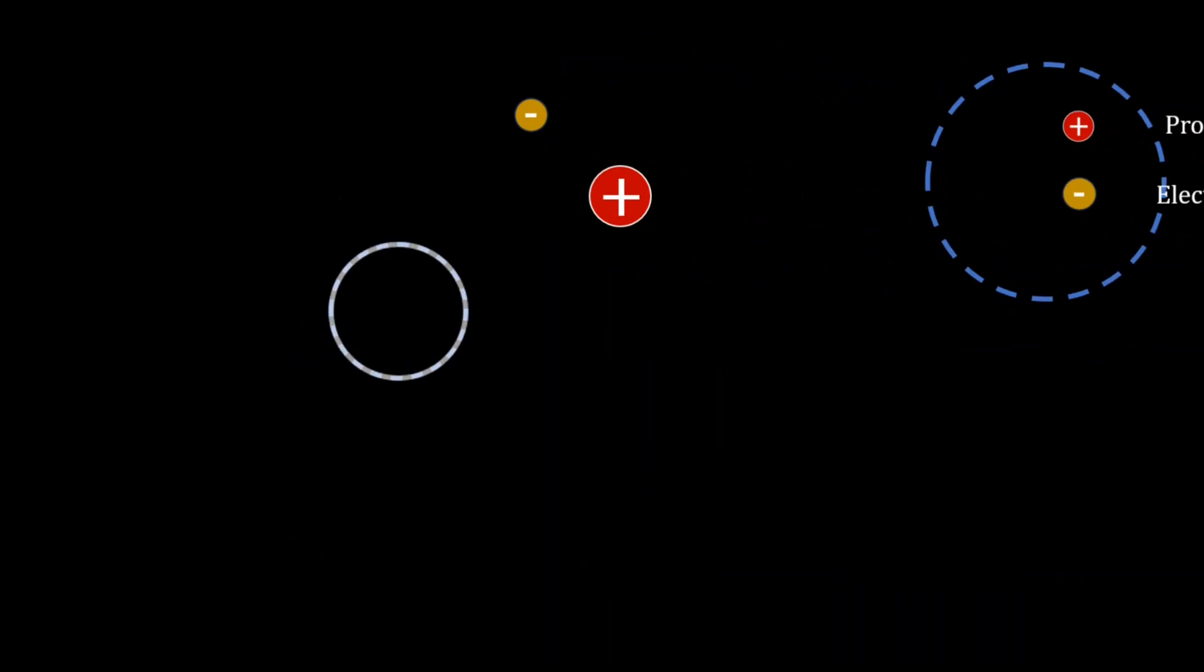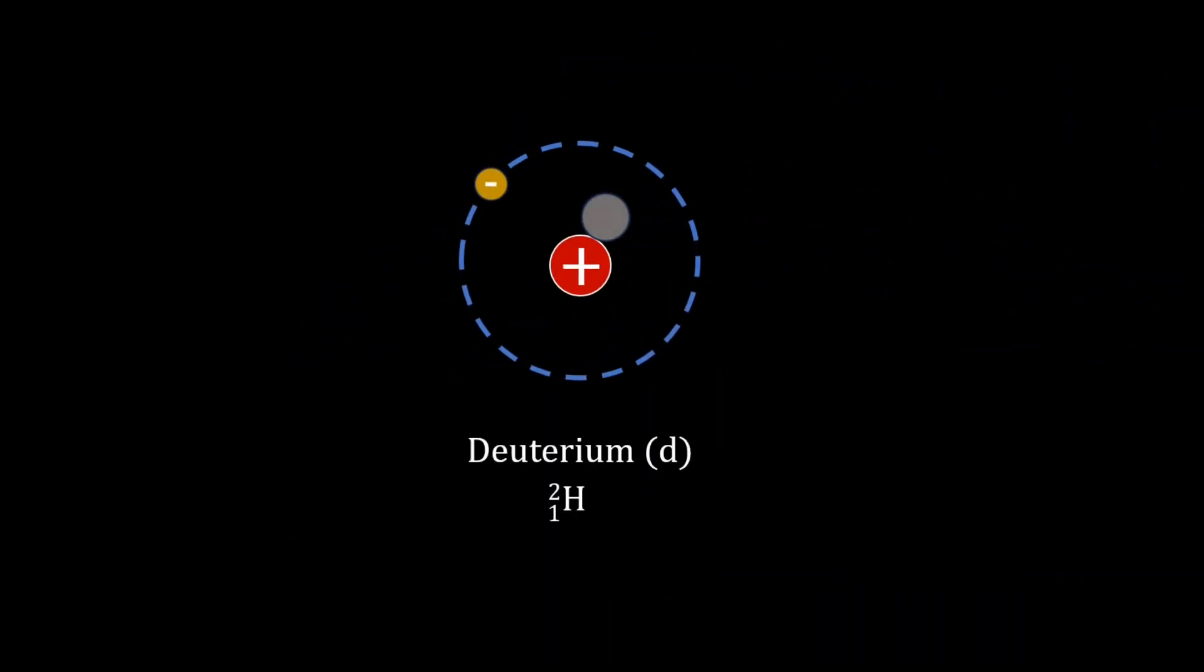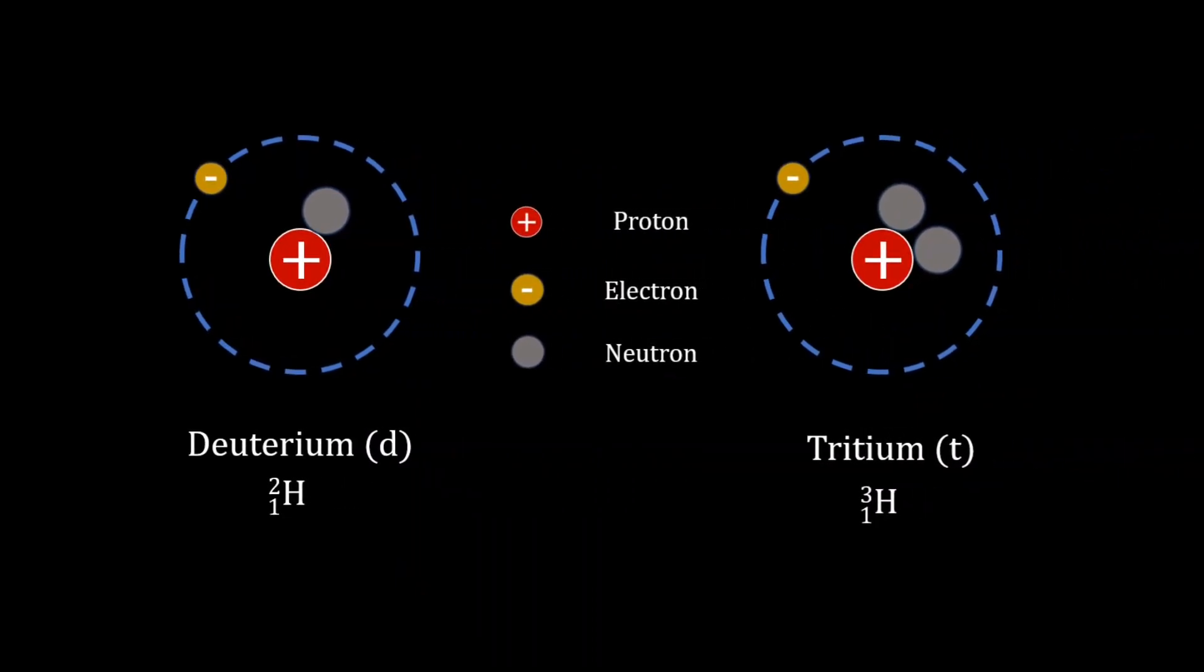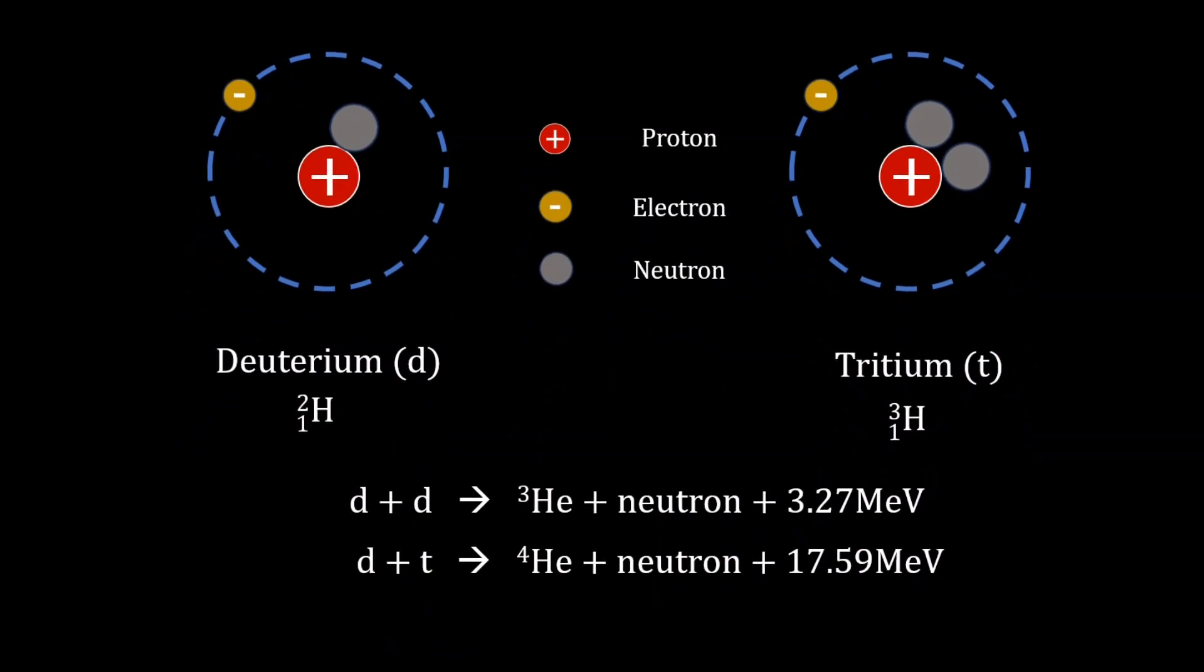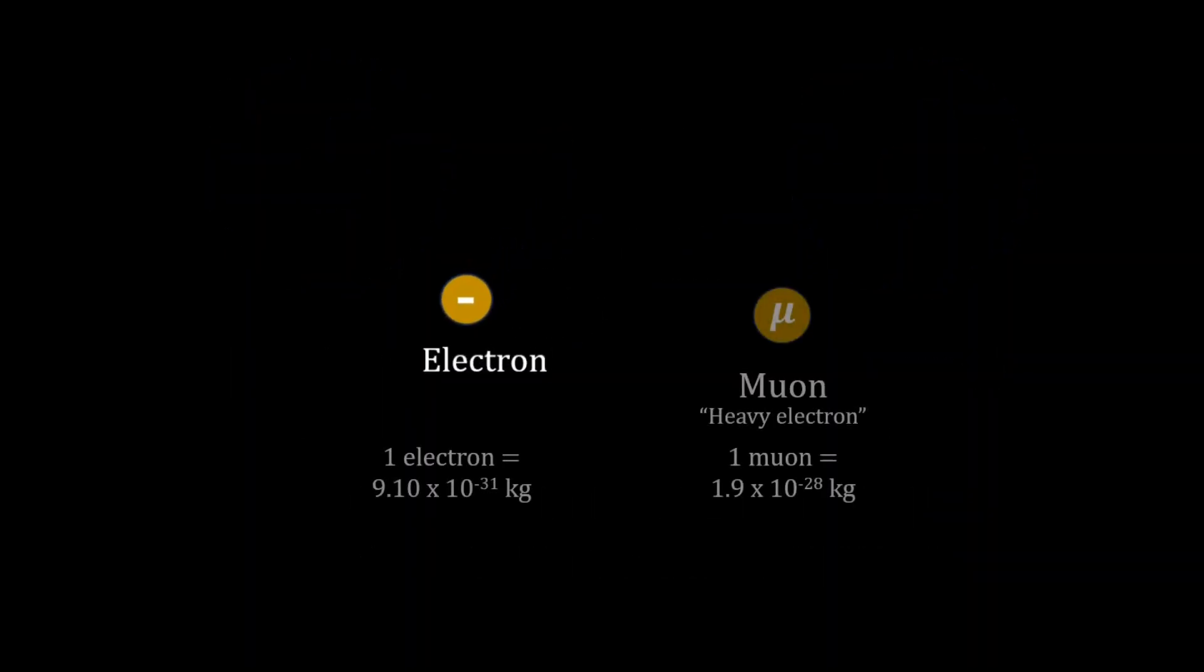Typically, we try to fuse deuterium with deuterium, an isotope of hydrogen with one neutron, or deuterium with tritium, which has two neutrons. Tritium, however, is radioactive and not abundant. Given the high energy needed to force even these nuclei together, we can consider catalyzed fusion, like muon-catalyzed fusion.